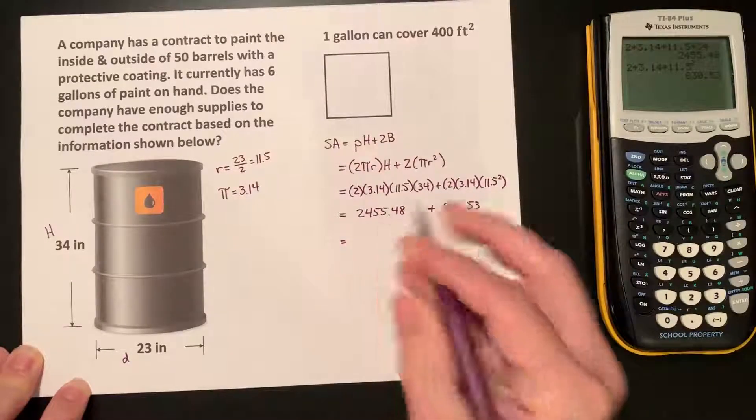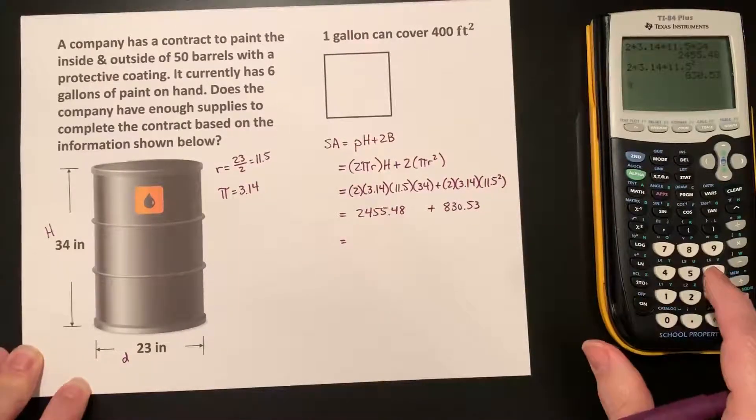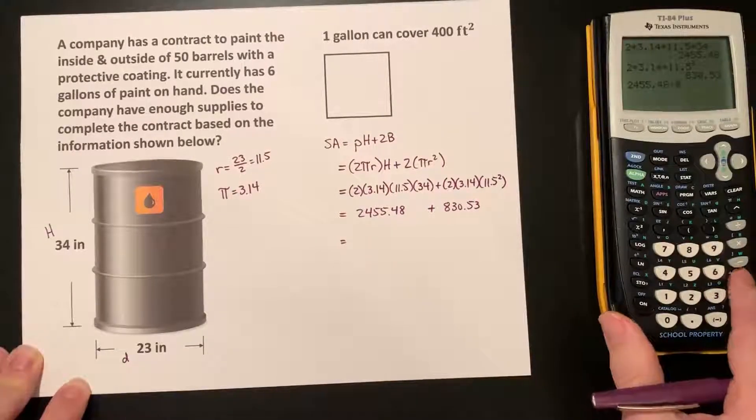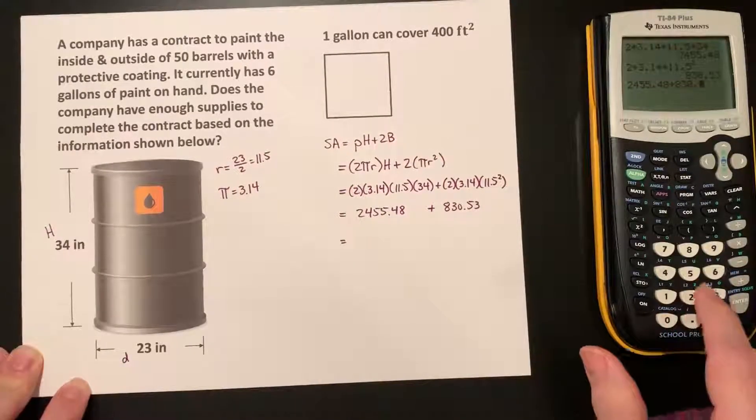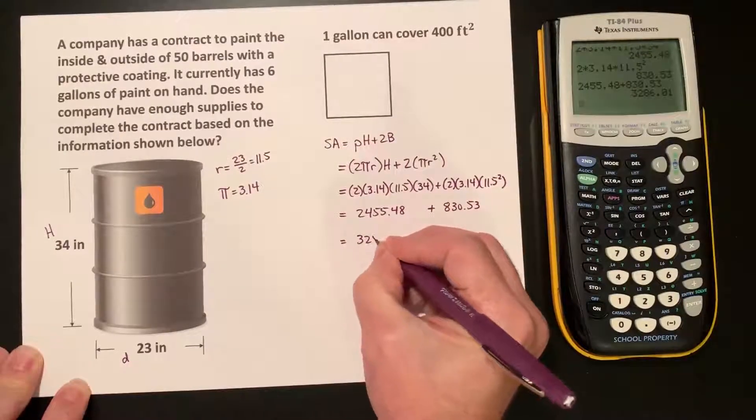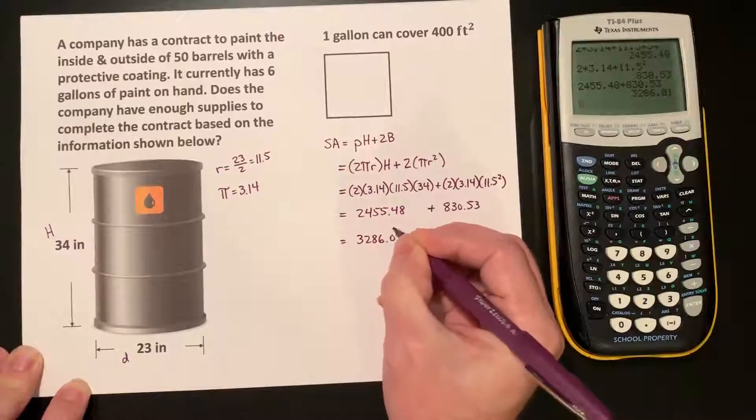And if we add those together, 2,455.48 plus 830.53, we get 3,286.01.